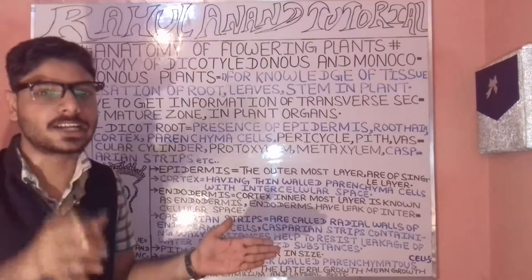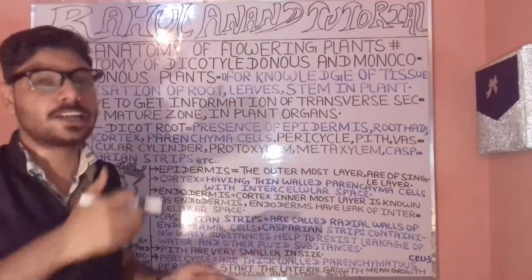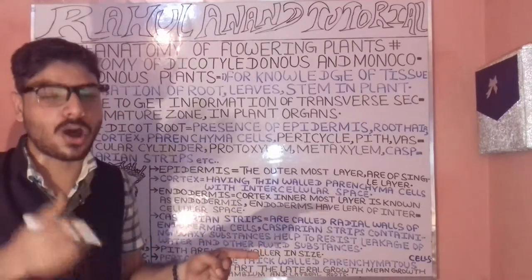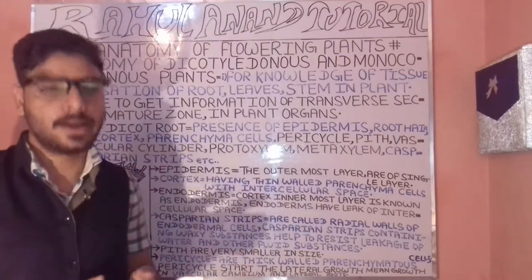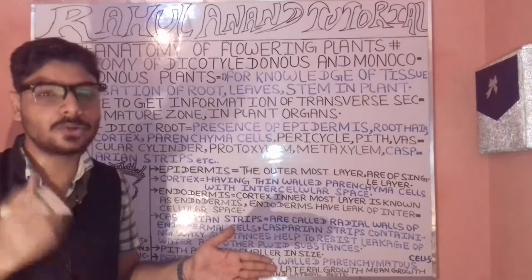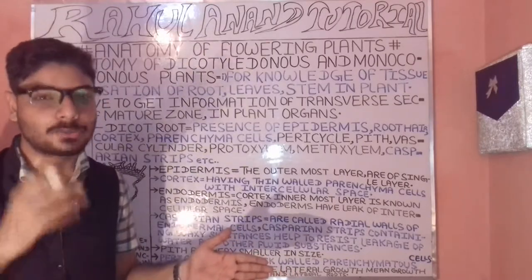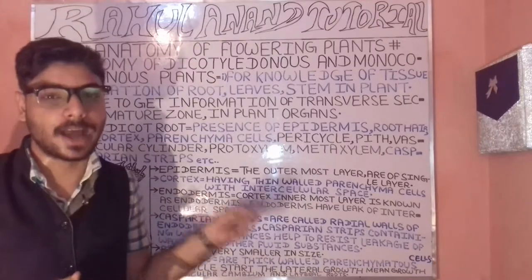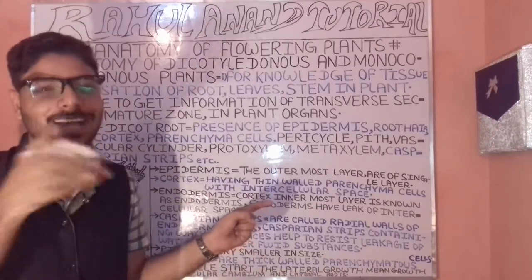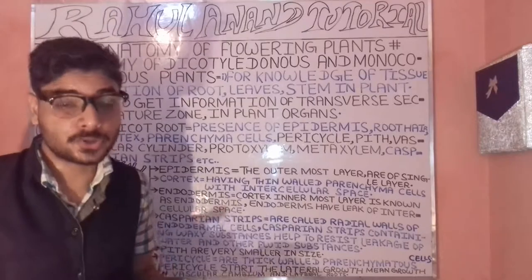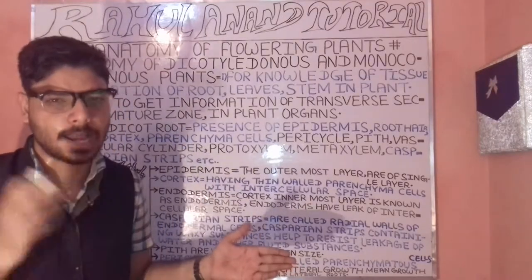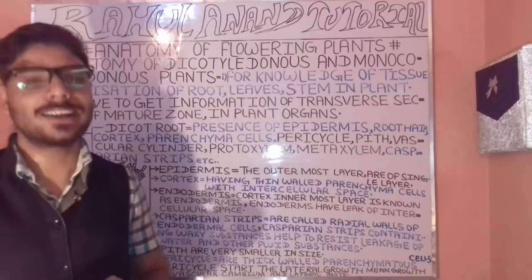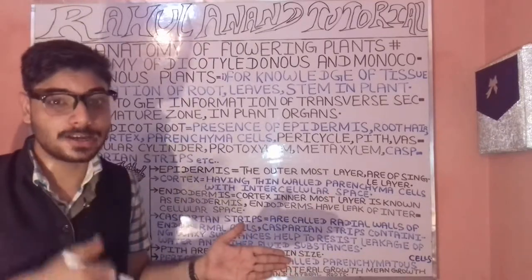You need to get knowledge in terms of the tissue level of organization — in terms of the root, the stem, and the leaves. When trying to understand these, we need to get a brief inspection and information regarding the transverse section of the mature tissue with reference to the particular plant portion.